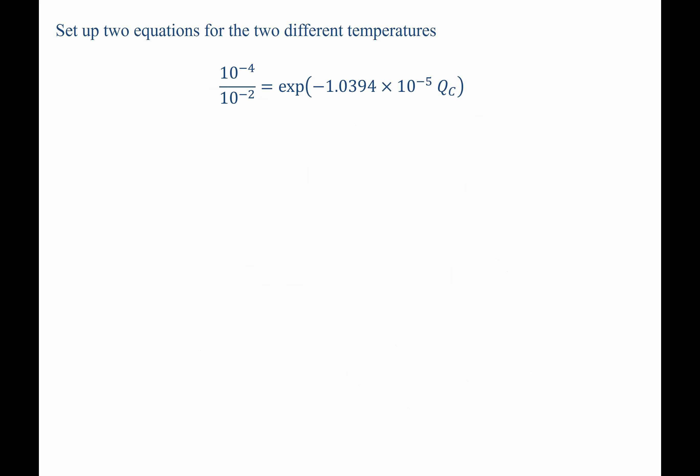Let's start by taking natural log of both sides. This gets rid of the exponential and just leaves us with negative 1.0394 times 10 to the negative 5, multiplied by our activation energy. Solving for Q, we find that it is equal to 443,066 joules per mole.